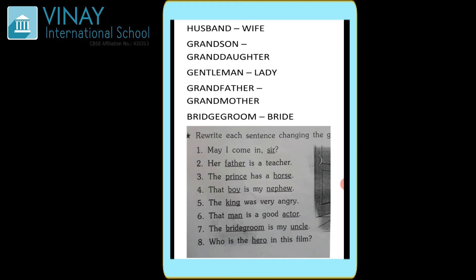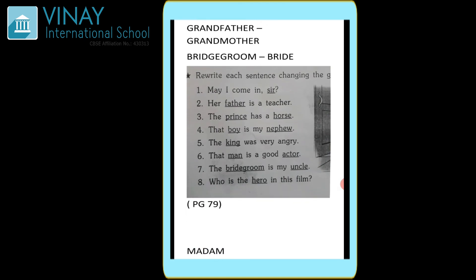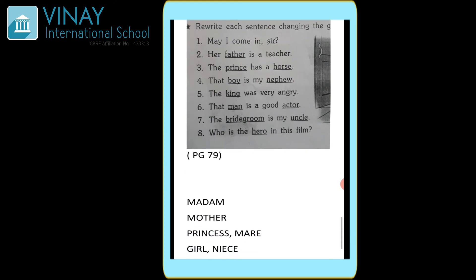Bridegroom and bride — jaise ki meinne bataya tha, groom matlab dulha. Again bride, that is feminine form — woh ho jaega dulhan. Bride means dulhan. Now moving on to the next question: rewrite each sentence changing the gender of nouns, page number 79. Yaha pe aapko jo bhi hai question, uska opposite gender mein answer dena hai.